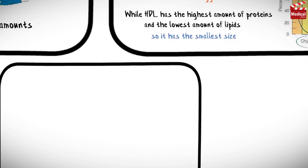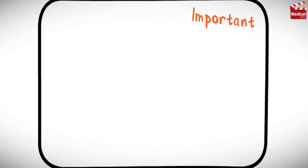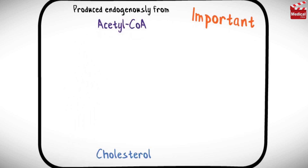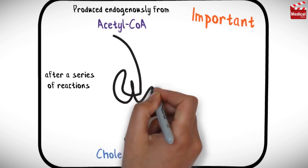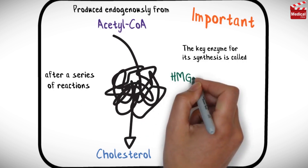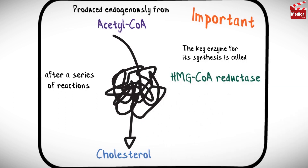Very important information we should know is that cholesterol is produced endogenously from acetyl-CoA after a series of reactions. And the key enzyme for its synthesis is called HMG-CoA reductase.